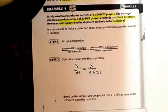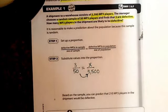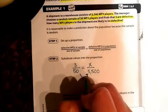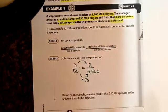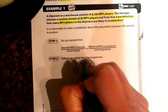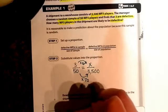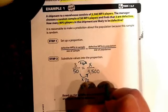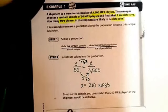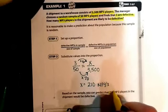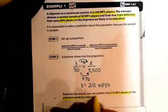To solve this proportion, we could use the shortcut. What did I do to 50 to get 3,500? I'd have to multiply that by 70. So I'm going to do the same thing to the top. 3 times 70 would mean that X is going to equal 210 MP3s. Based on the sample, we were able to predict that 210 MP3 players in the shipment would be defective.